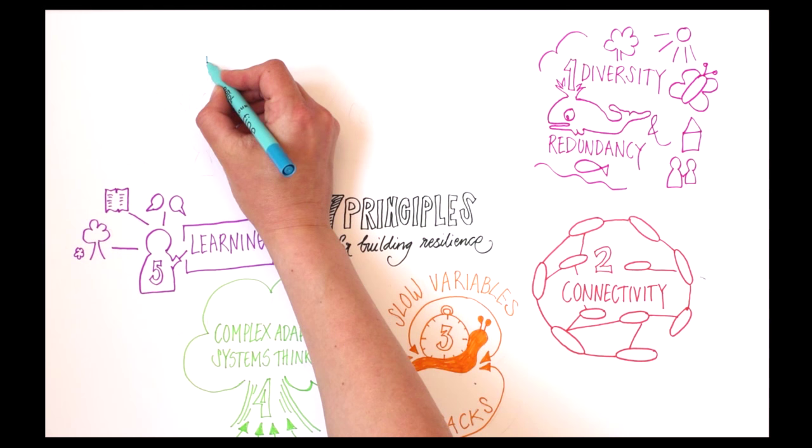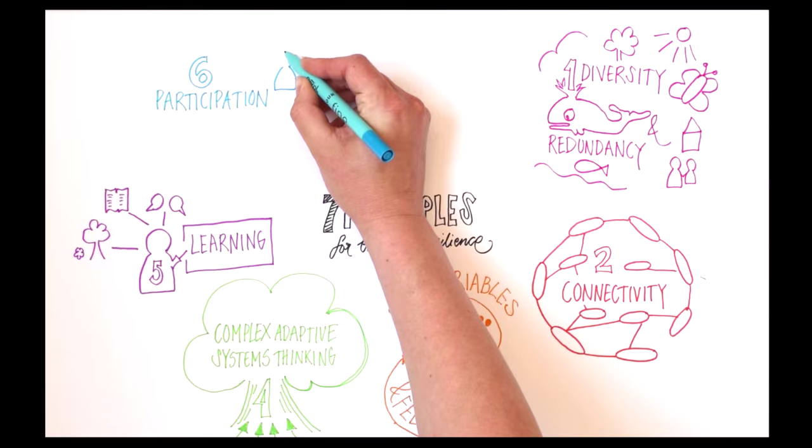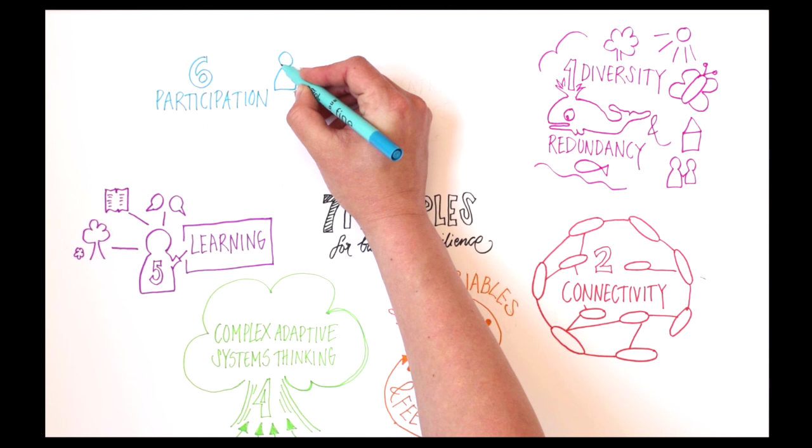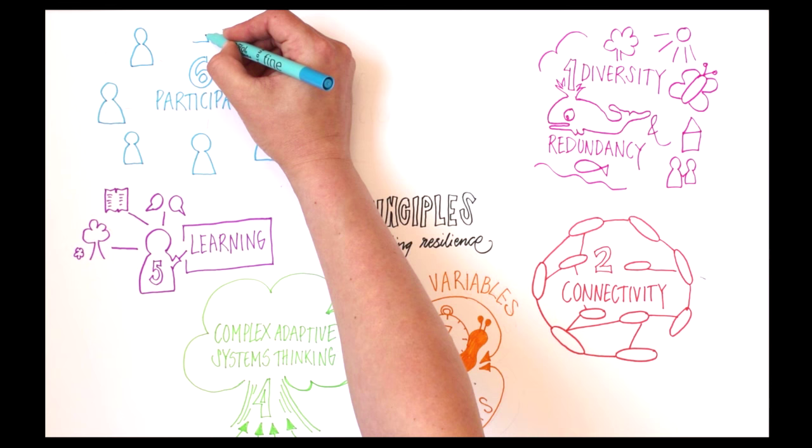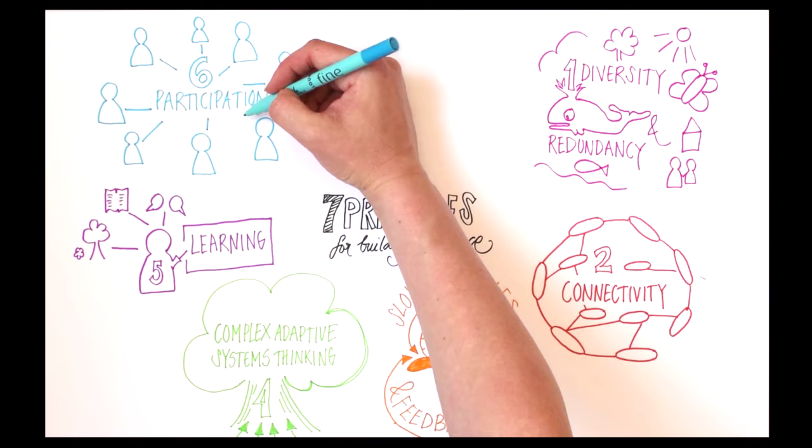Principle 6: Broaden participation. There are a range of advantages to broad and well-functioning participation. An informed and well-functioning group has the potential to build trust and a shared understanding, both fundamental ingredients for collective action.